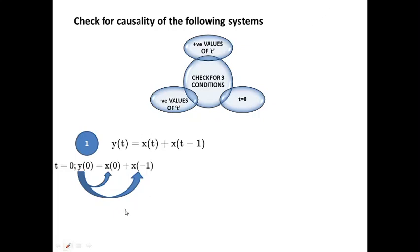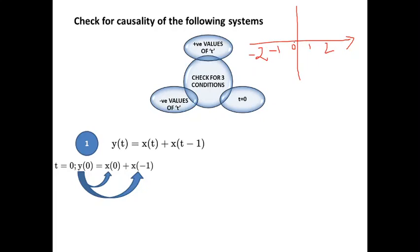Based on this, output at time t = 0 depends on present and past values of input. For a positive value, say t = 1: y(1) depends on x(1) (current) and x(0) (past with respect to 1). For a negative value, t = −1: y(−1) = x(−1) + x(−2). So y(−1) depends on present and past values of input.